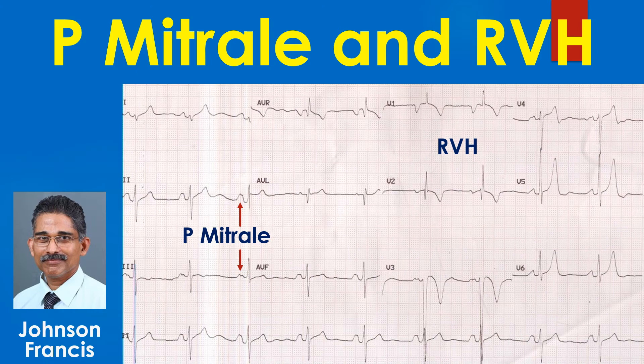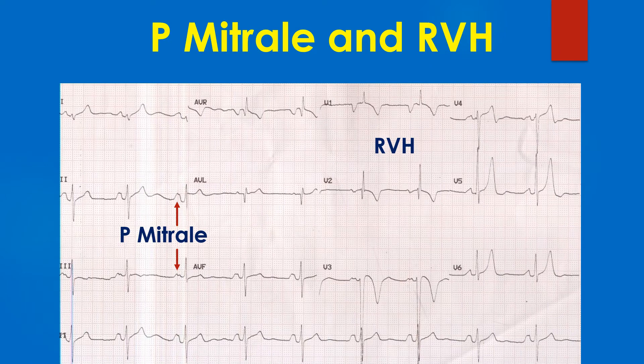This ECG shows P mitral and right ventricular hypertrophy. P mitral, or left atrial enlargement, is manifest as broad notched P waves in lead 2, classically seen in mitral stenosis. The broad negative P wave in V1 is also indicative of left atrial overload.